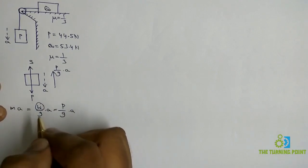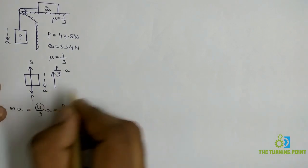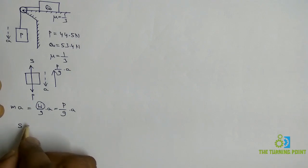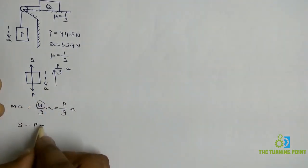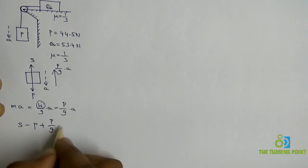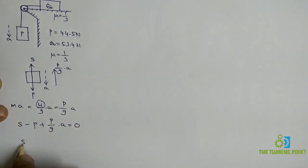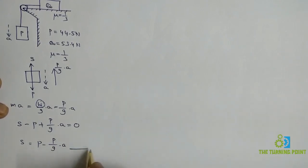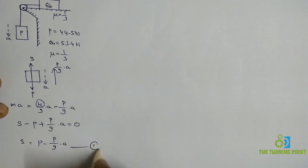Apply sigma Fy equal to 0 for block P. S is along the positive y direction, so: S minus P plus (P/g)·a equals 0. Consider this as Equation 1.